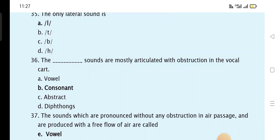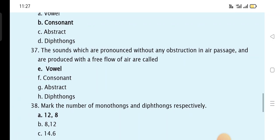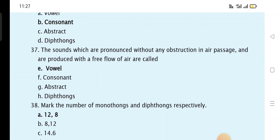The right sounds are mostly articulated with obstruction in the vocal tract as consonants. The sounds which are produced without any obstruction in air passage and are produced with the free flow of air are vowels.